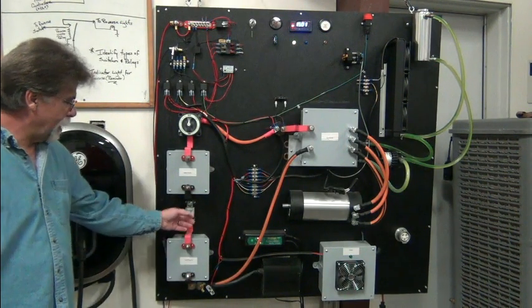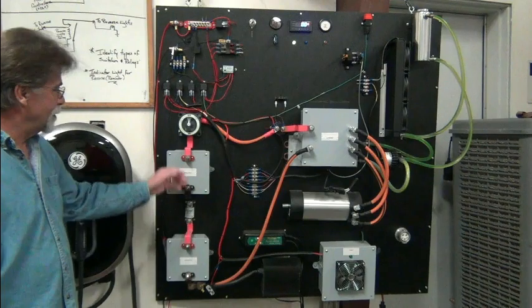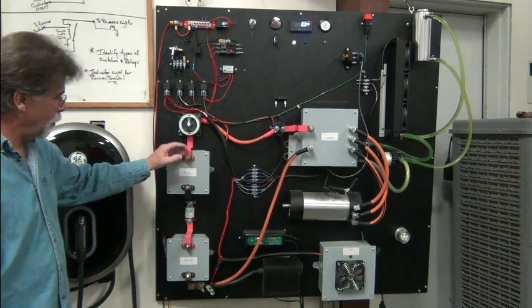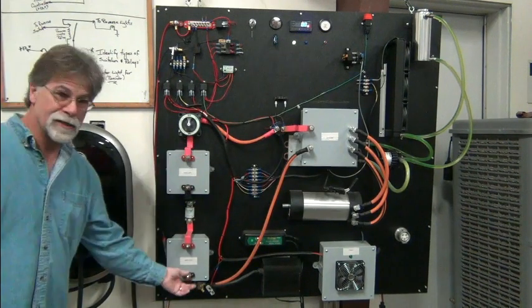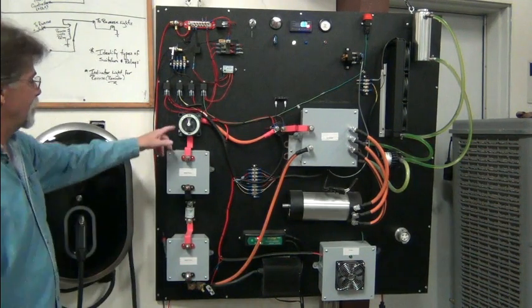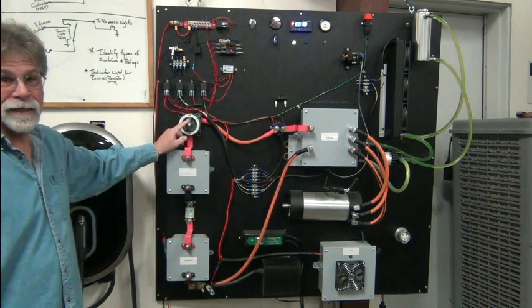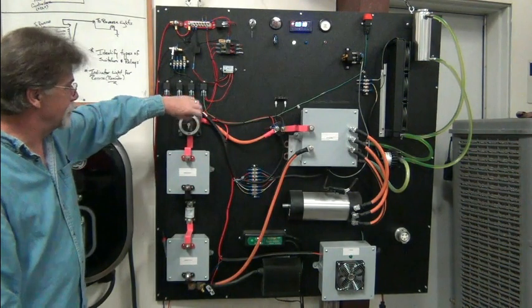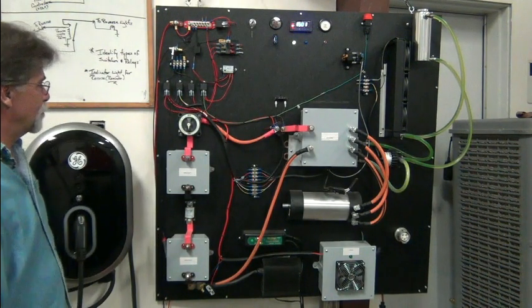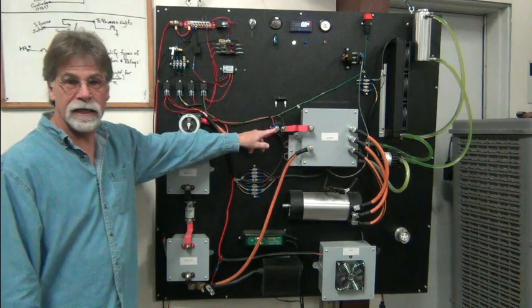So we've got a fuse between the two packs. This is our most positive point in the packs, this would be the most negative. Here's our main disconnect. When that's on, allows power to go to here.